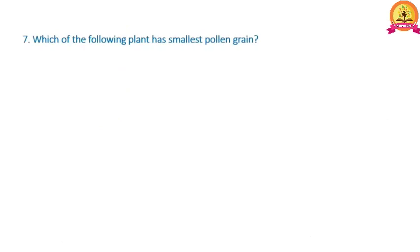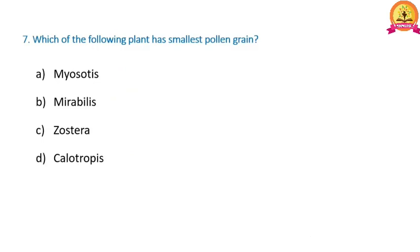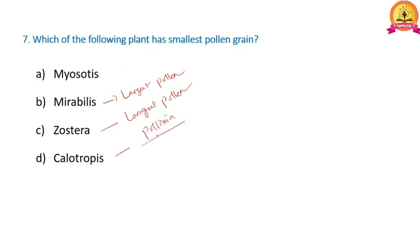Next: which plant has the smallest pollen grain? In Mirabilis, the largest pollen grain is present. In Zostera, the longest pollen grain is present. In Calotropis, pollen grains are present in a cyclic structure known as pollinia. In Myosotis, the smallest pollen grain is present, measuring about 6 micrometers in diameter. Therefore, option A is correct.